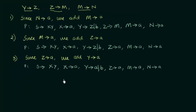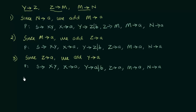We have successfully removed all the unit productions, and if you check this latest production rule, there are no unit productions. However, we are not done yet, because the symbols Z, M, and N are unreachable symbols. Why are they unreachable? Because from the start symbol S we get X and Y; from X we get A, and from Y we get A and B, which are terminal symbols. There is no way to reach Z, M, or N from the start symbol, so these three are unreachable symbols and must be removed.